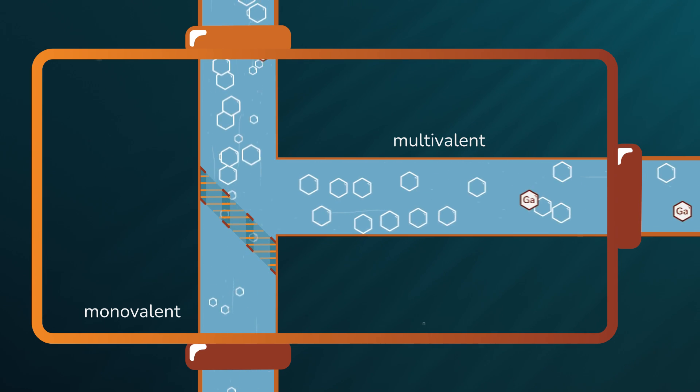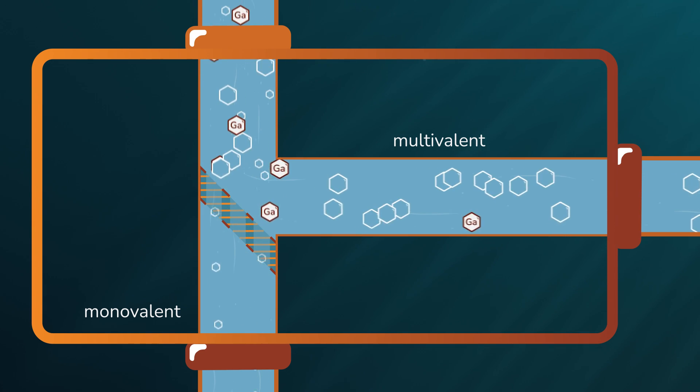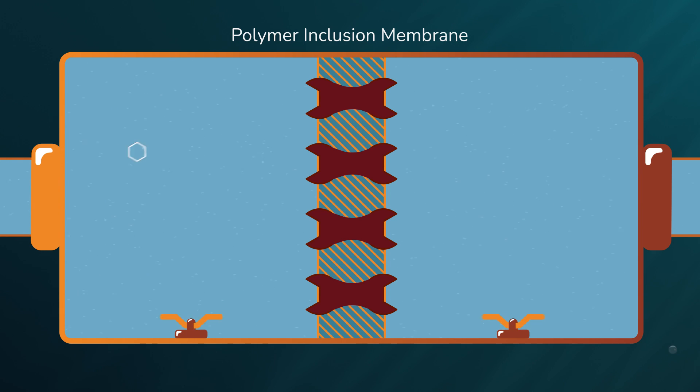To isolate the gallium, a further step is required. We are developing another technology based on the use of polymeric inclusion membranes. These membranes contain a molecule called ionophore that is selective for the element of interest, in this case gallium. What it does is promote the passage of this gallium from the brine to another solution.